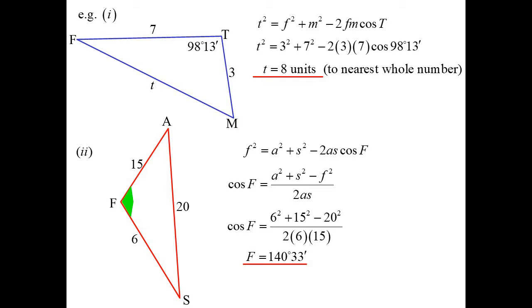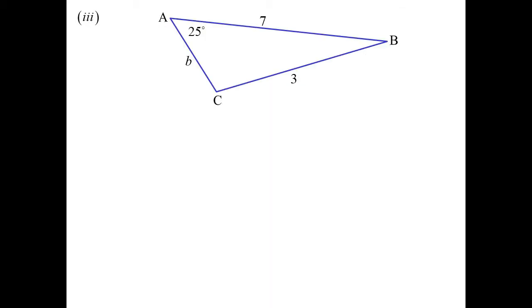OK, now, this one here, you'd look at it and go, well, I want to use the sine rule. Oh, hang on. I've only got one angle. So that's no good. Oh, well, I'll use the cosine rule. Oh, hang on. The side I'm trying to find is not opposite to the angle that I have.